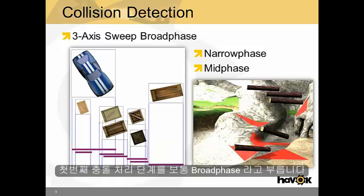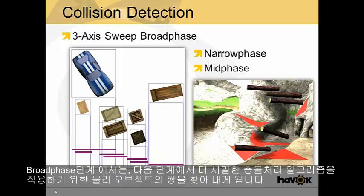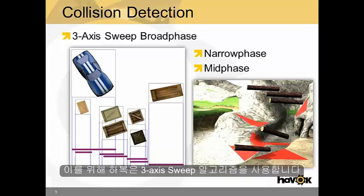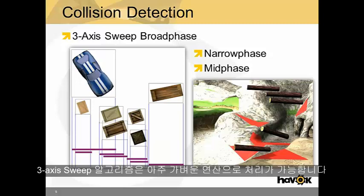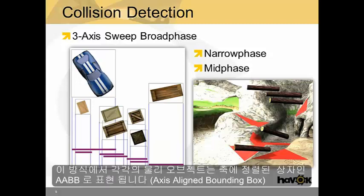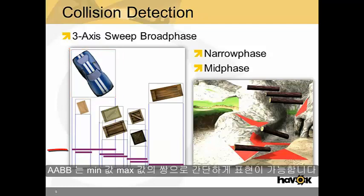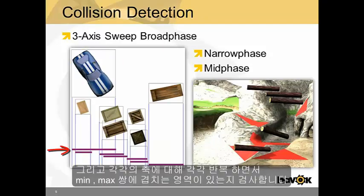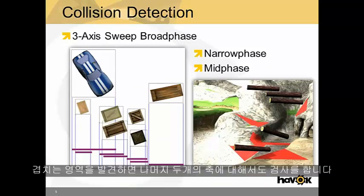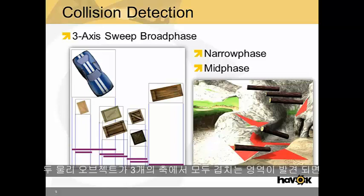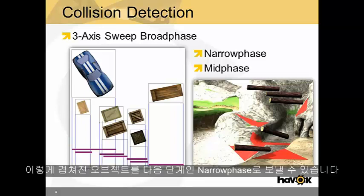The first phase of collision detection is often called the broad phase. In this phase, we are simply trying to identify pairs of objects to pass on to more detailed algorithms. Havok uses a three-axis sweep. In this algorithm, each object is represented as an AABB — an axis-aligned bounding box. In each of the three axes, the AABB is represented as a min and max pair. We iterate over an axis and look for overlaps in the min and max pairs. When we find one, we check the other two axes for overlap as well. If two objects overlap in all three axes, we know their AABBs overlap and we can pass them on to the narrow phase.